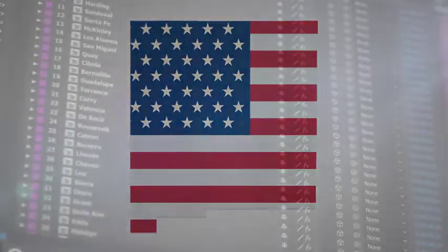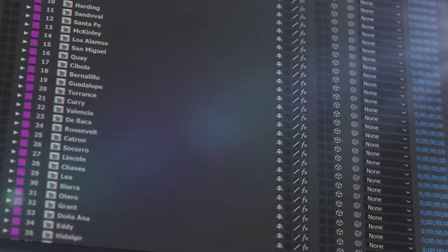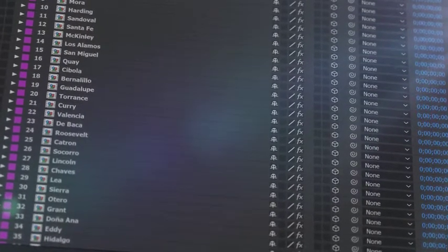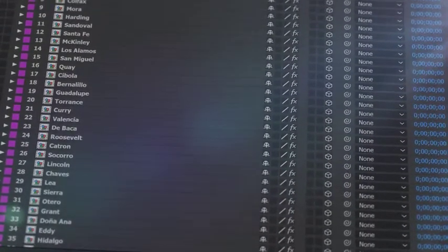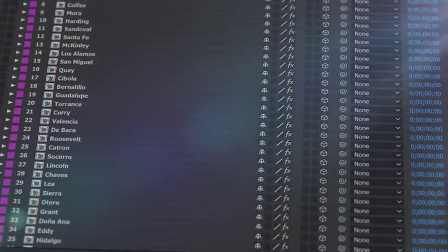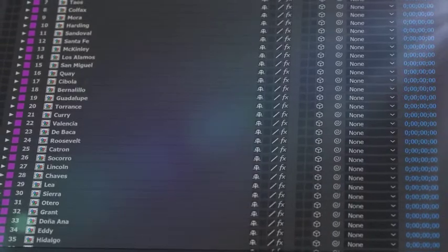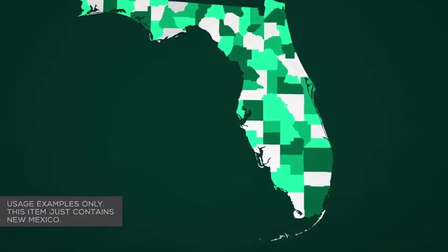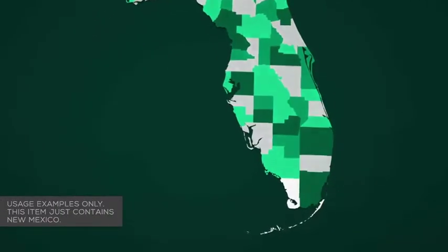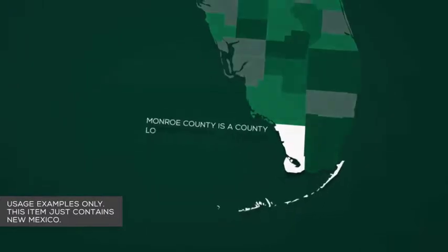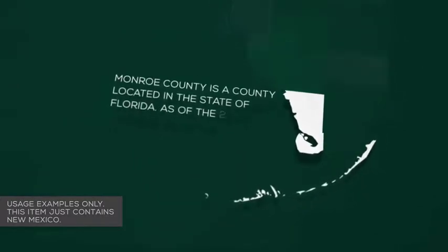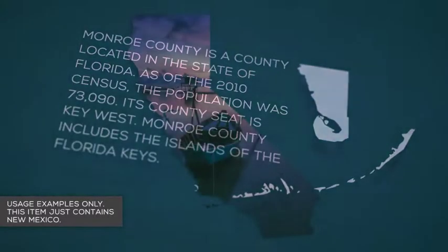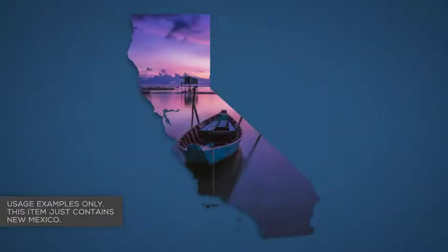All the counties that make up the specific state are isolated on a separate 3D layer, so you can scale, position, color, and add effects as required. Zoom in to areas of interest and hide the layers you don't need to focus on certain counties. Animate individual counties and add your own text and camera moves as required.